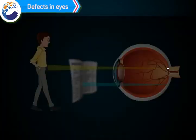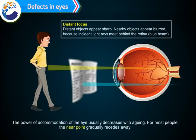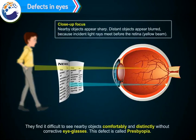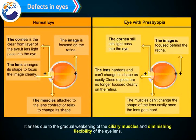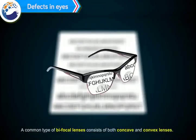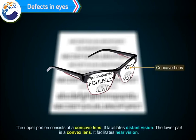The power of accommodation of the eye usually decreases with aging. For most people, the near point gradually recedes away and they find it difficult to see nearby objects comfortably without corrective eyeglasses. This defect is called presbyopia. It arises due to the gradual weakening of the ciliary muscles and diminishing flexibility of the eye lens. Sometimes a person may suffer from both myopia and hypermetropia, requiring bifocal lenses — the upper portion consists of a concave lens for distant vision, and the lower part is a convex lens for near vision.